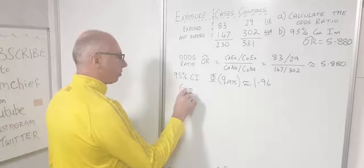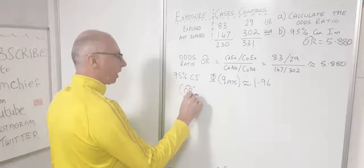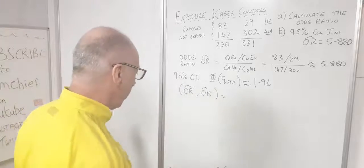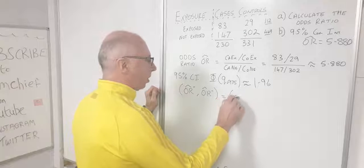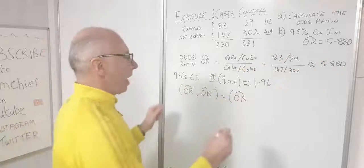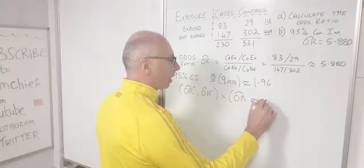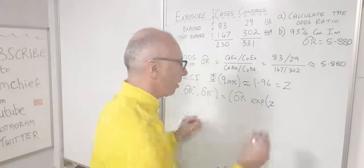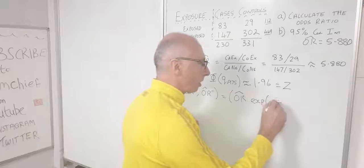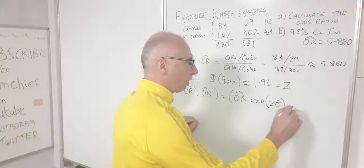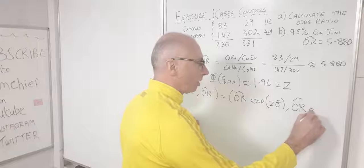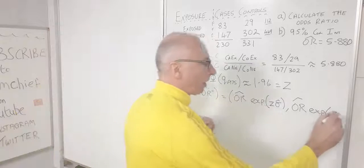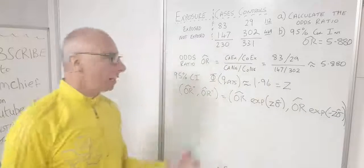Our confidence interval formula gives us two values: the upper value is our odds ratio multiplied by the exponential function raised to the power of z times the standard error (sigma-hat), and the lower value is the odds ratio times the exponential function raised to the negative of z times the standard error.